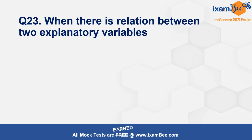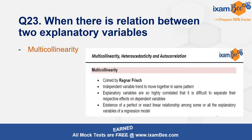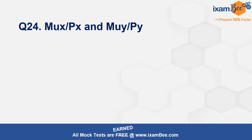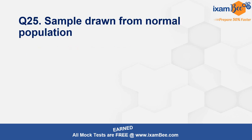When there is a linear relationship between two explanatory variables, it is called multicollinearity — covered in the notes. Then there was a question where the ratio of MU_x/P_x and MU_y/P_y was given, and you had to determine whether X should be substituted for Y, comparing the ratio of prices with the slope of the indifference curve.